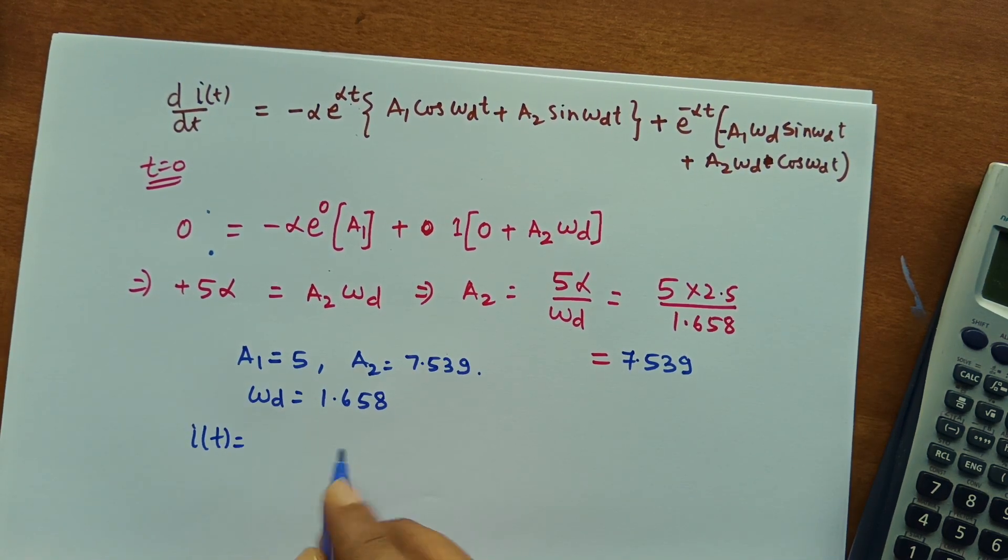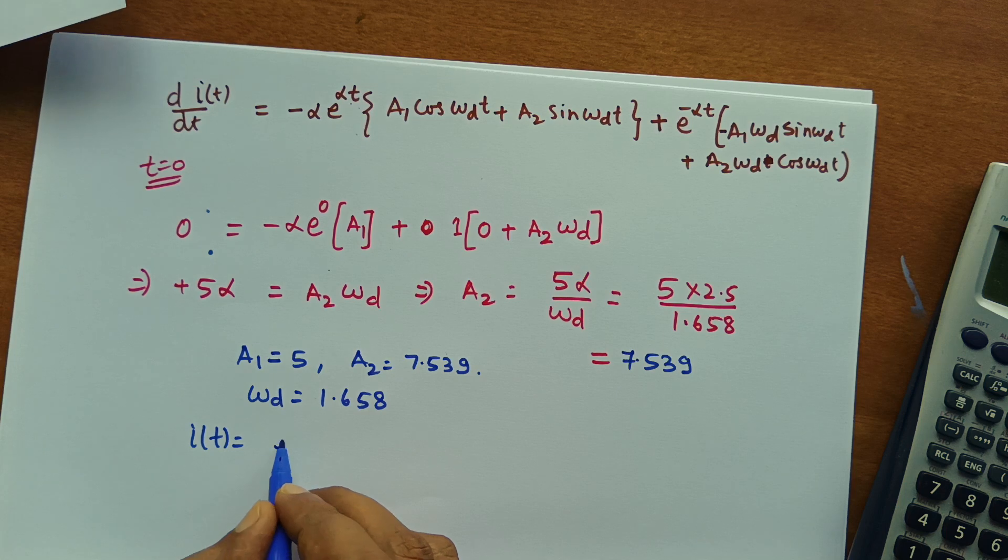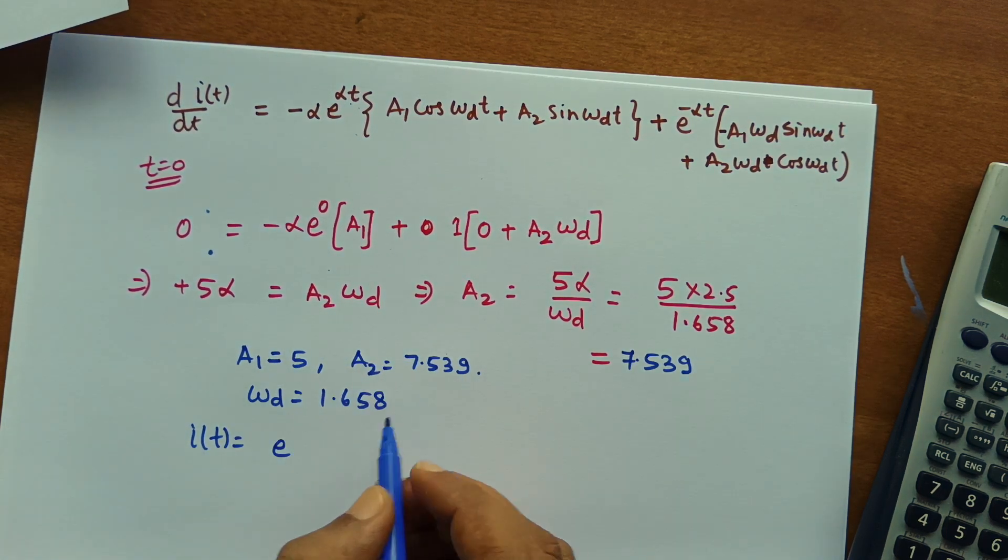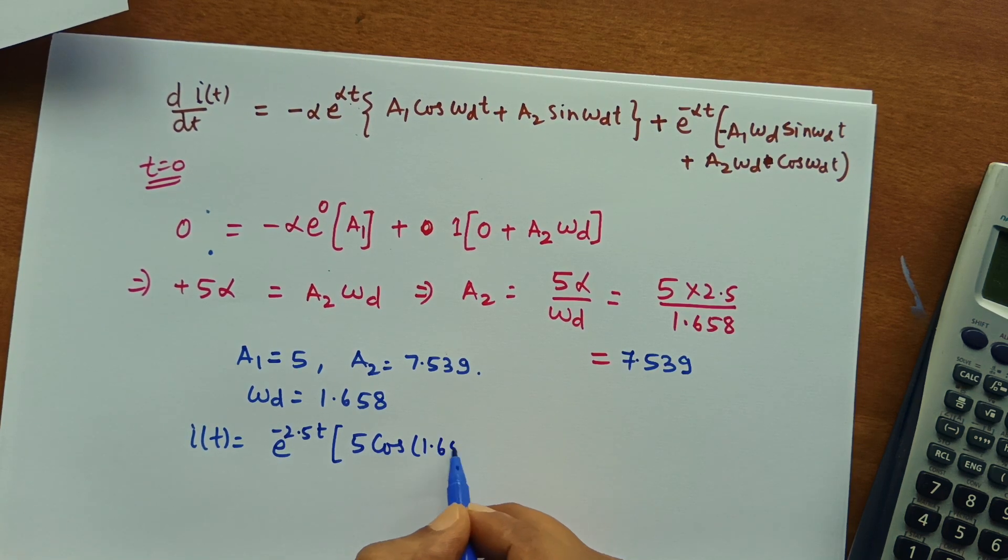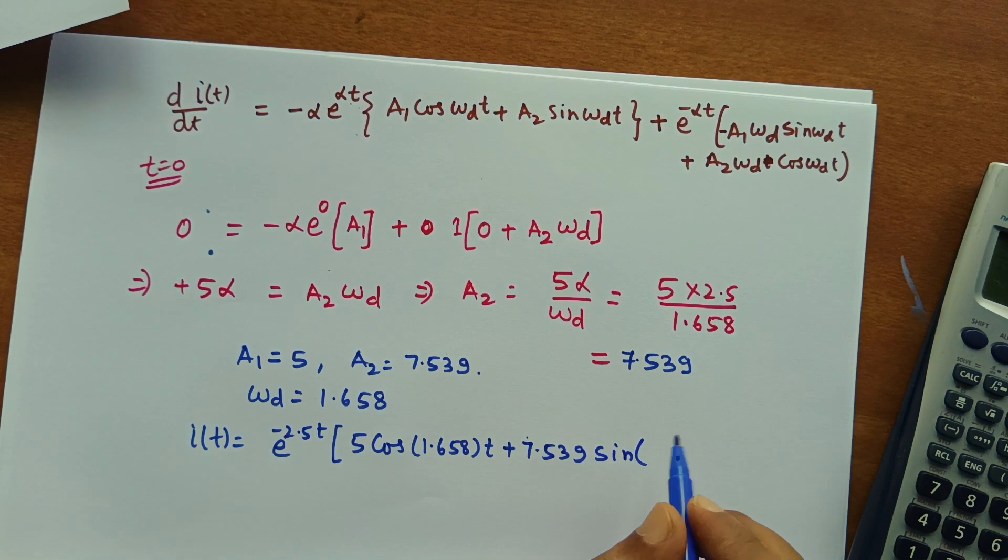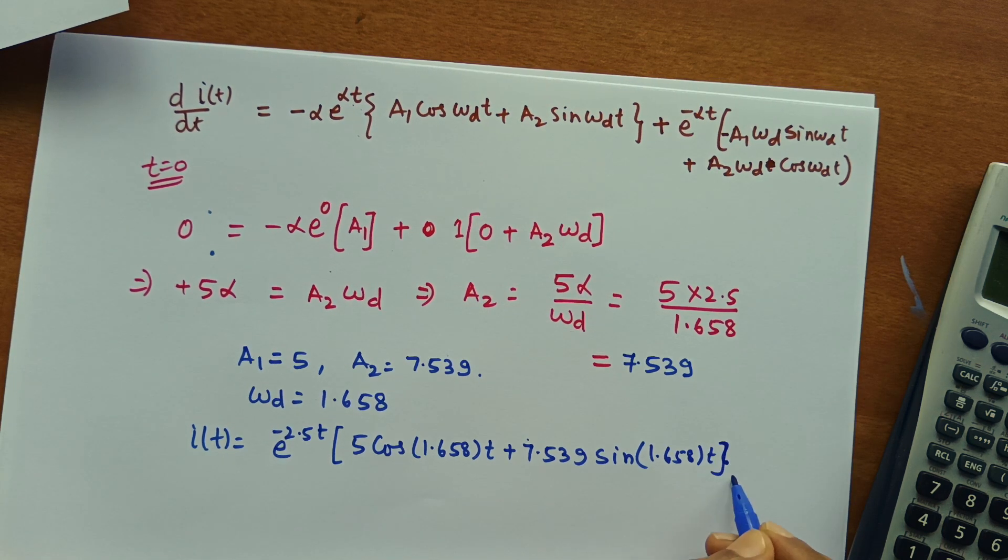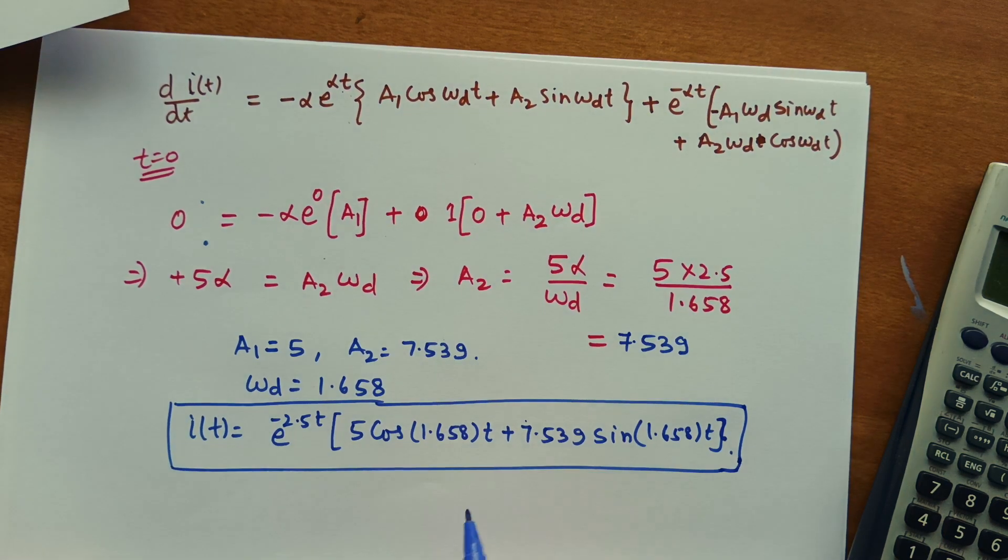It equal to 5 e to the power minus alpha t. So e to the power minus alpha. Alpha is 2.5. So minus 2.5 t. Then a1. A1 is 5 cos 1.658 t. Then plus a2. A2 is 7.539 sin 1.658 t. So this is our solution for under damped condition.